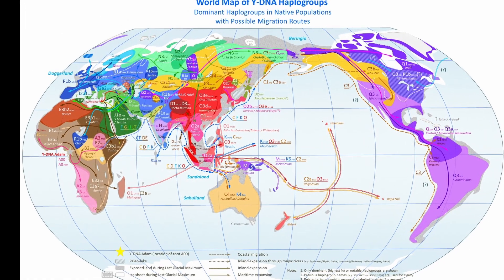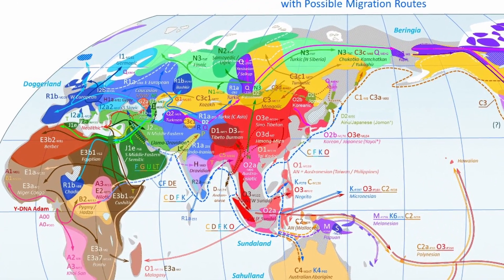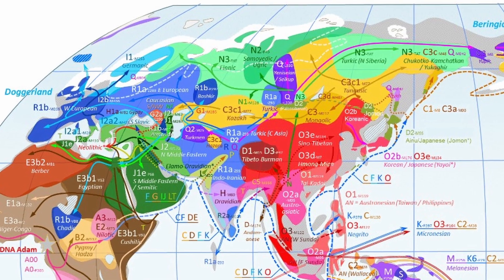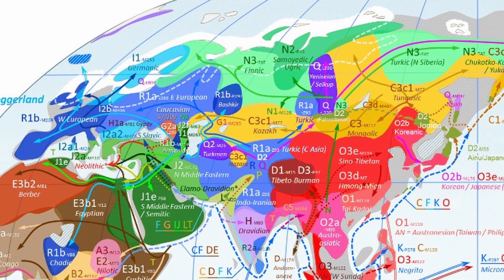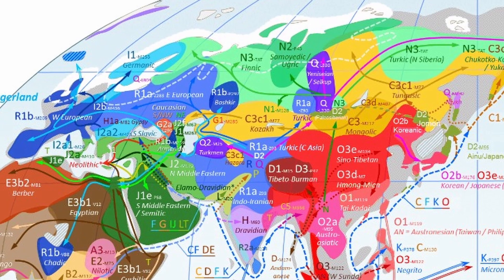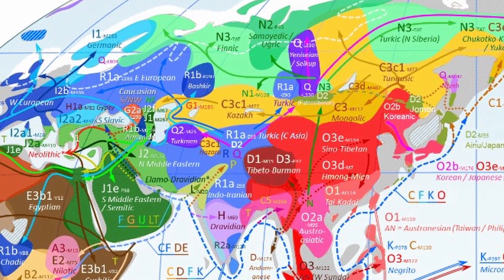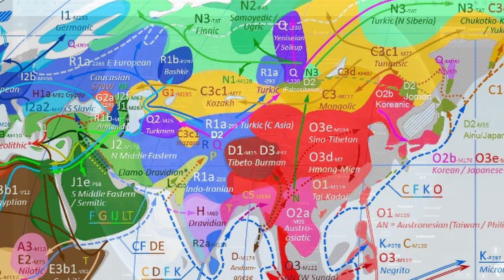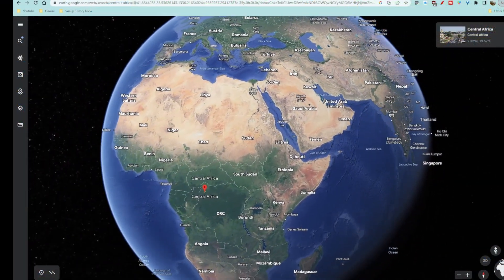This human family tree enables us to explore lineages through time and geographical locations, unveiling both the modern history of our direct paternal surname line and the ancient history of our shared ancestors. If you are interested in exploring other DNA haplogroups and their journeys from Africa to the present day, please leave a comment indicating which ones you'd like to see.